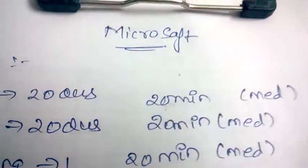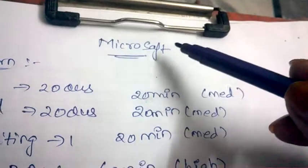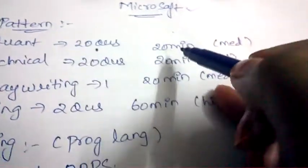Friends, welcome back to Best Way to Study. In this video, we are going to discuss the exam pattern for the written test for Microsoft company. Let's start. Coming to quantitative aptitude, 20 questions will be asked, out of which you will be given 20 minutes of time, and the level of difficulty will be medium.